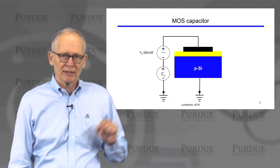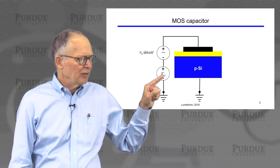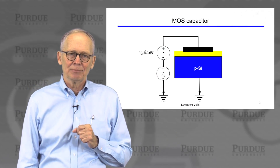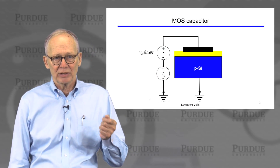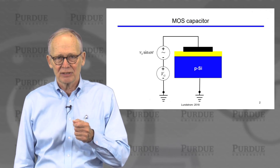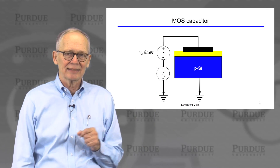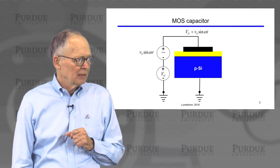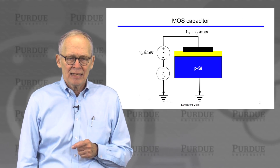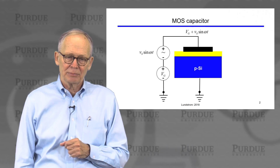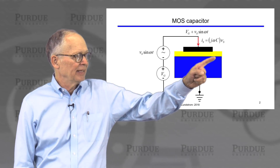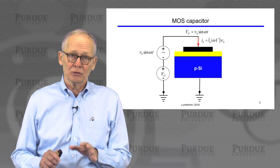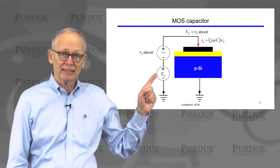The experiment goes something like this. We have an MOS capacitor, and we've been talking about how the bands bend and what happens in the semiconductor when we change the DC bias on the gate — going from accumulation to flat band to depletion and then to inversion. Now we're going to add a small AC signal in series with that voltage. We have both a DC and an AC voltage, and we'll have an AC current flowing through that capacitor. That AC current is the admittance of the capacitor times the AC voltage, so we can use measurements like this to deduce the capacitance at a given DC bias.